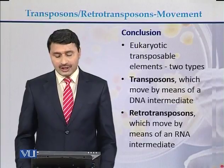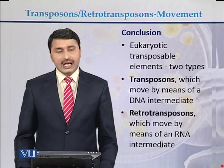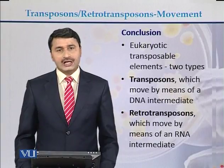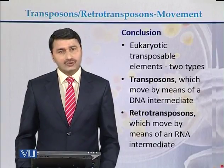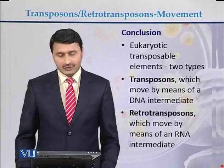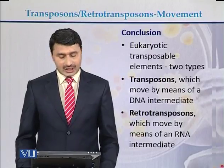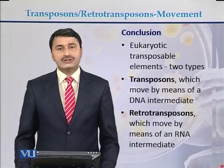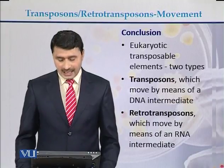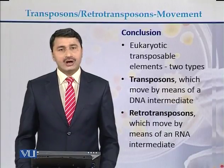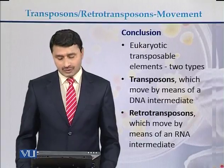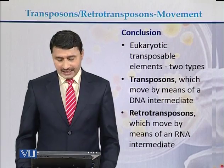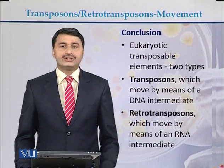To conclude, eukaryotic transposable elements are of two types. The first type are transposons, which move by means of a DNA intermediate. The second type are retrotransposons, which move by means of an RNA intermediate.